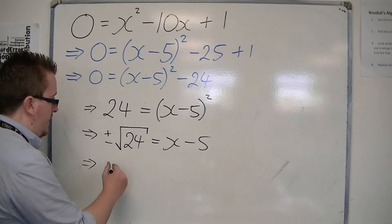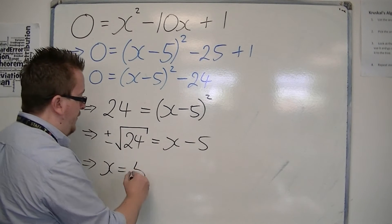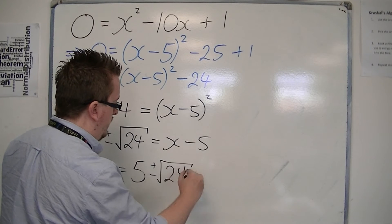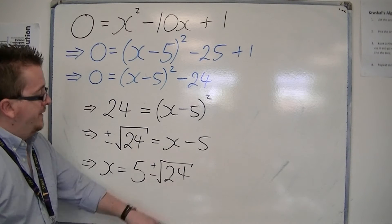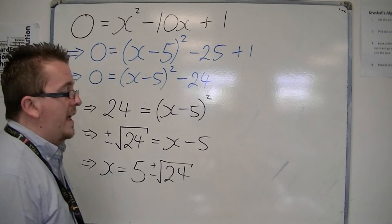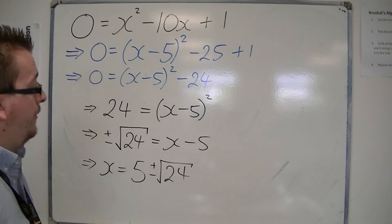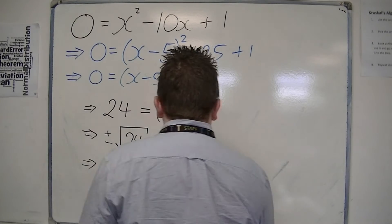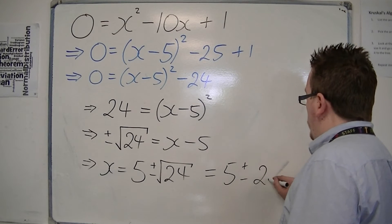So, what we have is x is equal to, if you add 5 to both sides, 5 plus or minus the square root of 24. And they are the two solutions that we're looking for. Now, that can be simplified down, so that you get 24 is 4 times 6, so that's the square root of 4 times 6 is 2 root 6. So, we can say that this is 5 plus or minus 2 root 6.